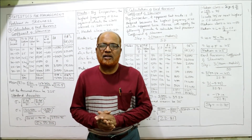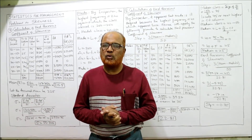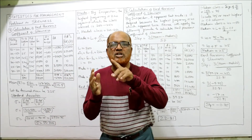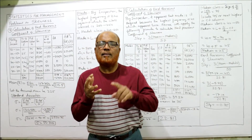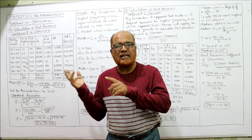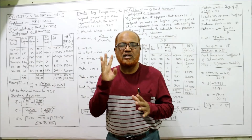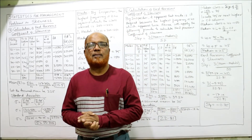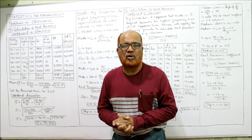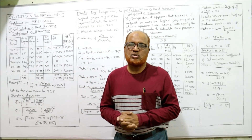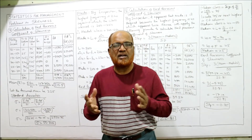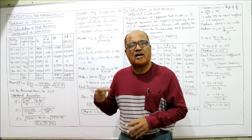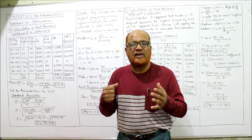Eight problems have been explained on the concept of skewness. Before this, two topics were already covered: measure of central tendency and measure of dispersion, and now measure of skewness — three topics completed. In the next video, the next topic in Statistics for Management will be taken up. Please give a like, share the channel so more students can watch and build confidence.